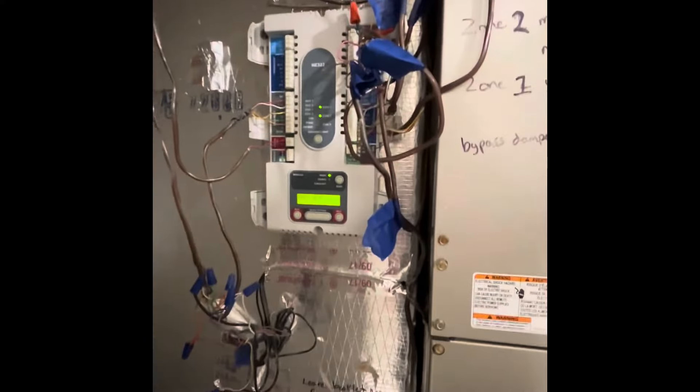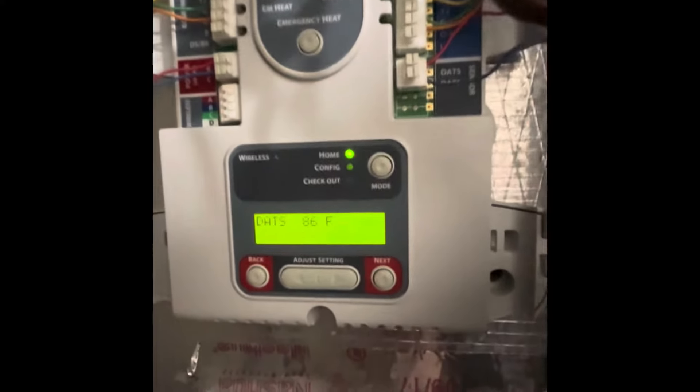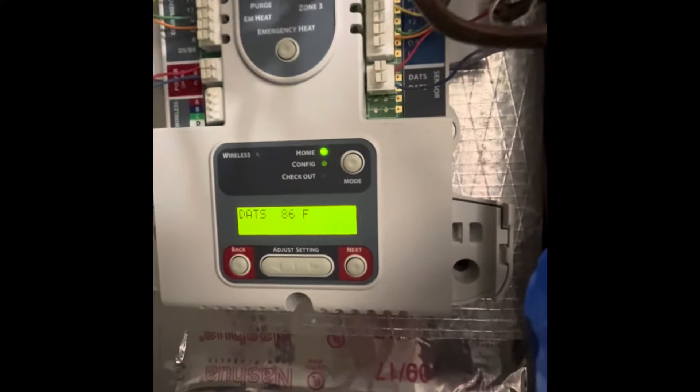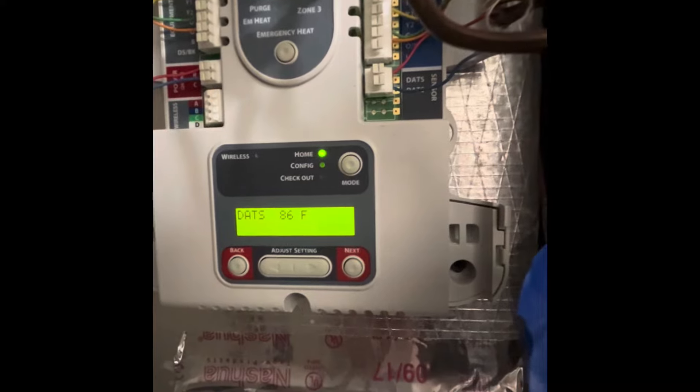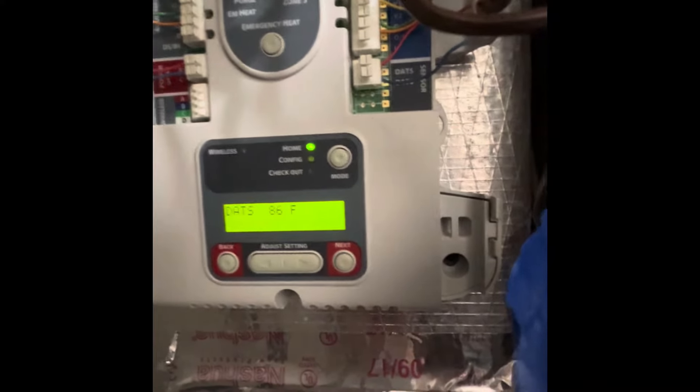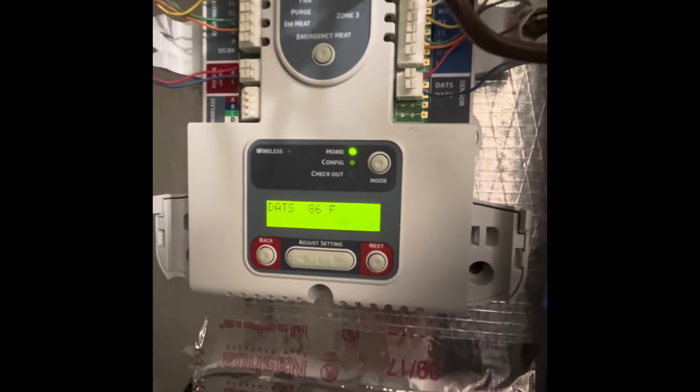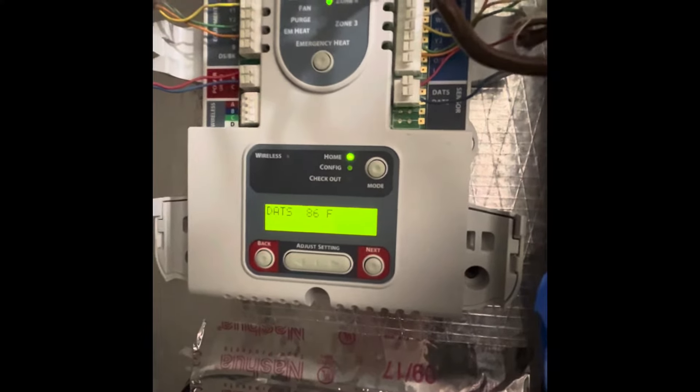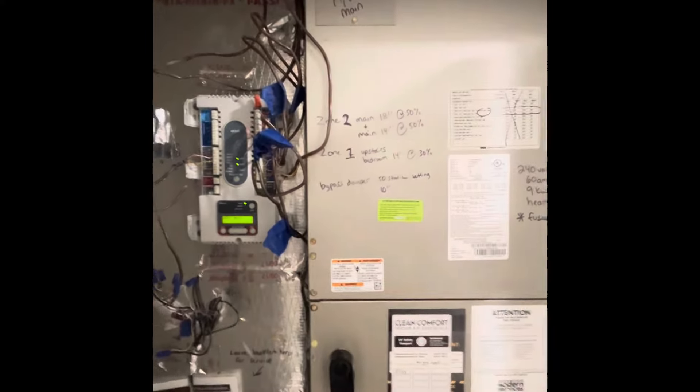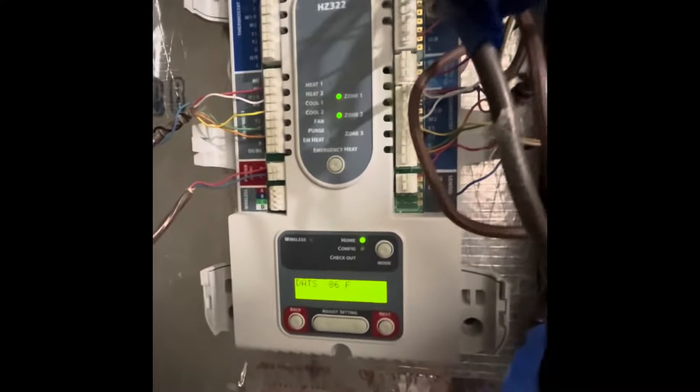In the attic and the supply ductwork, the data sensor is currently reading 86 degrees. Normally these go off either at 170 or 40 degrees Fahrenheit. So if the system gets too cold inside the ductwork, it'll shut off, or if it gets too hot, to protect the system. This is the most common problem with a Honeywell zone panel—is this data sensor.